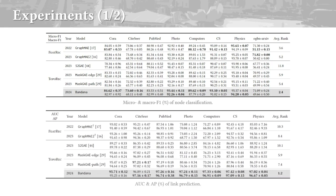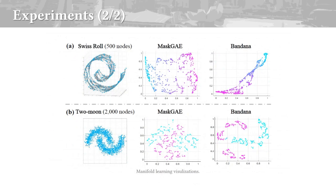For link prediction, Bandana greatly outperforms the performance of existing masked graph autoencoders. Bandana is also more informative in learning graph structure, as illustrated by the embedding visualizations above.